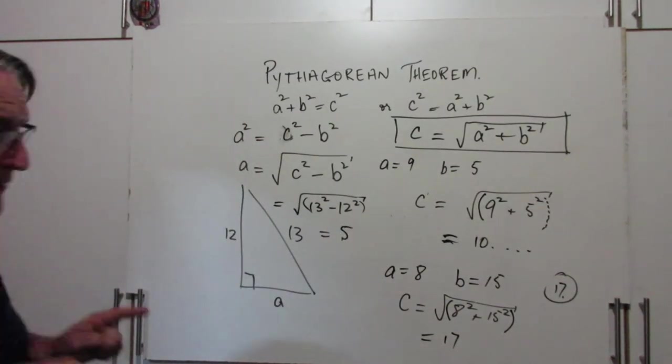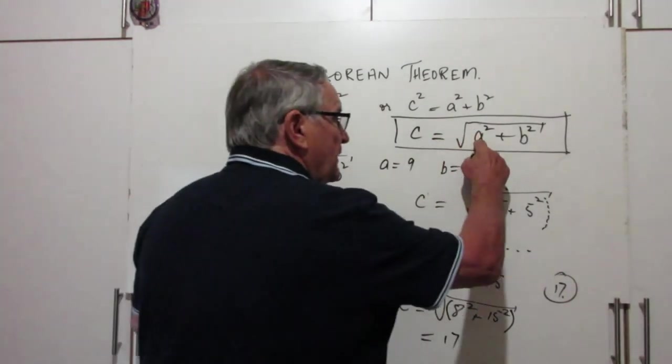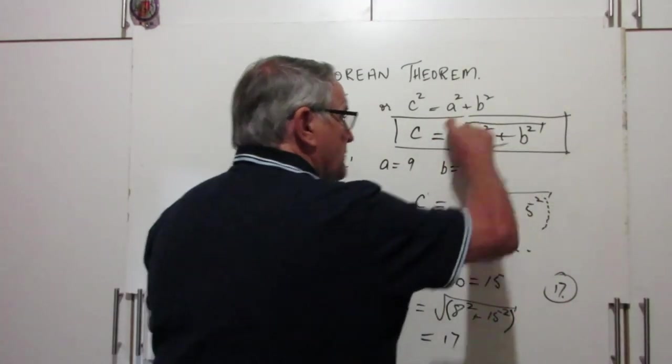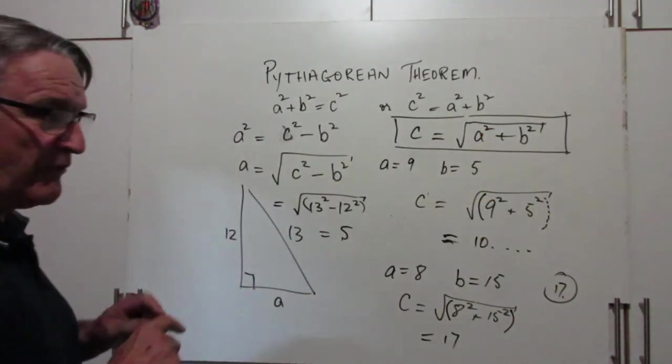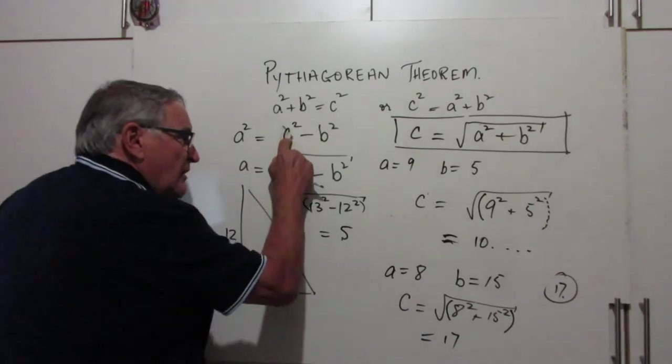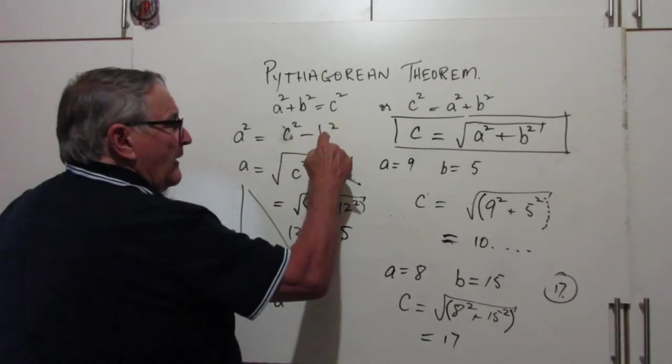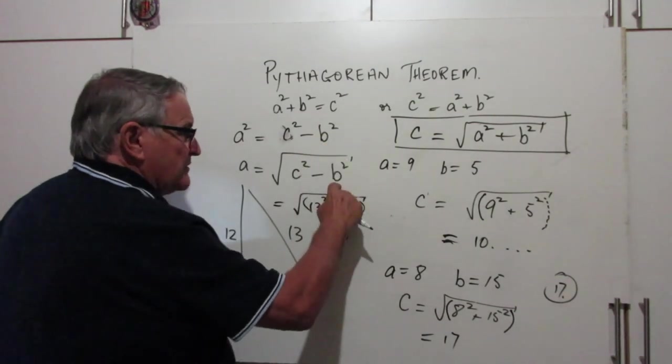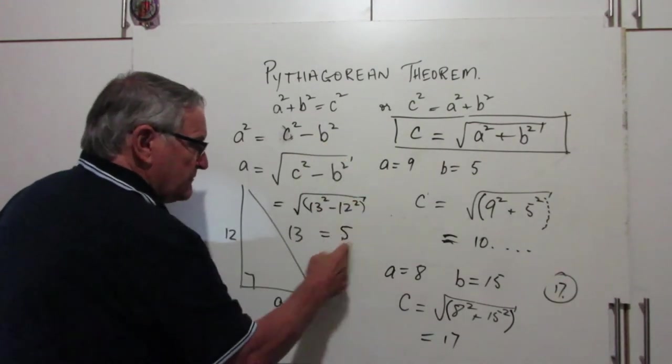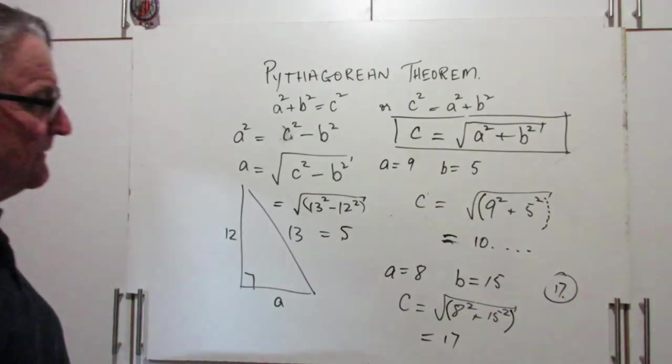So if you're looking for the hypotenuse, you've got to square the legs, add them, take the square root. If you're looking for one of the legs, you've got to square the hypotenuse, subtract the square of the other leg that you know, then take the square root. There you go. Piece of cake.